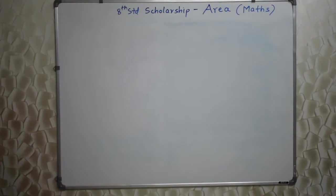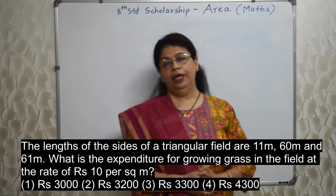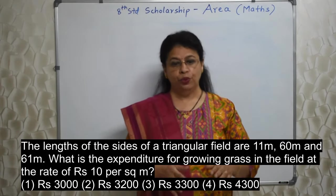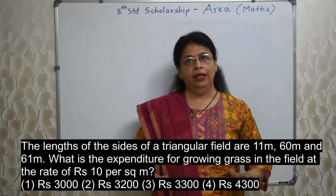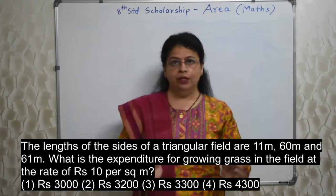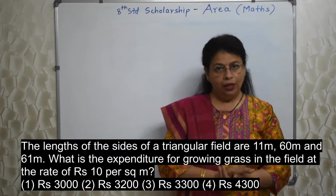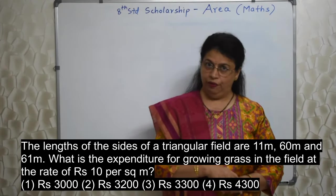Students, read the next sum which will appear on your screen. The lengths of the sides of a triangular field are 11 meter, 60 meter and 61 meter. What is the expenditure for growing grass in the field at the rate of rupees 10 per meter square? Here we need to find out the area of that triangular field because we want to grow grass inside that field. Inside anything is area. Border is perimeter or circumference. So inside we need to grow grass. So we need to find out the area of that triangular field. Clever students will observe the numbers which are given to you: 11, 60, 61.